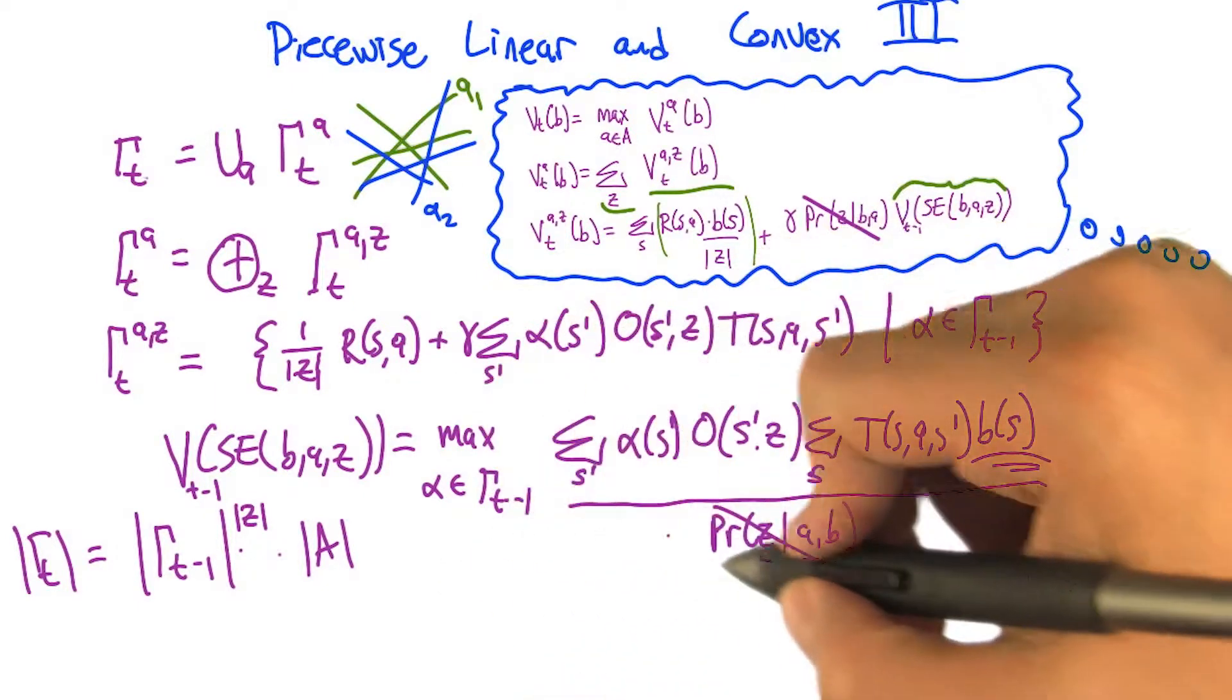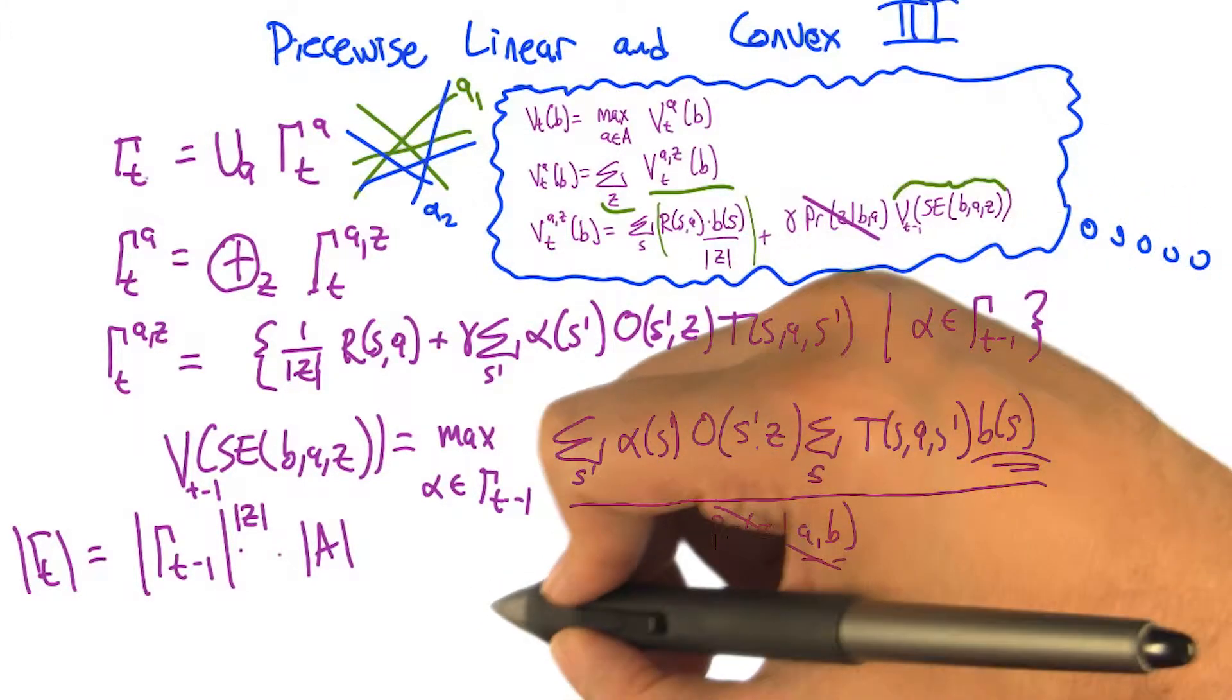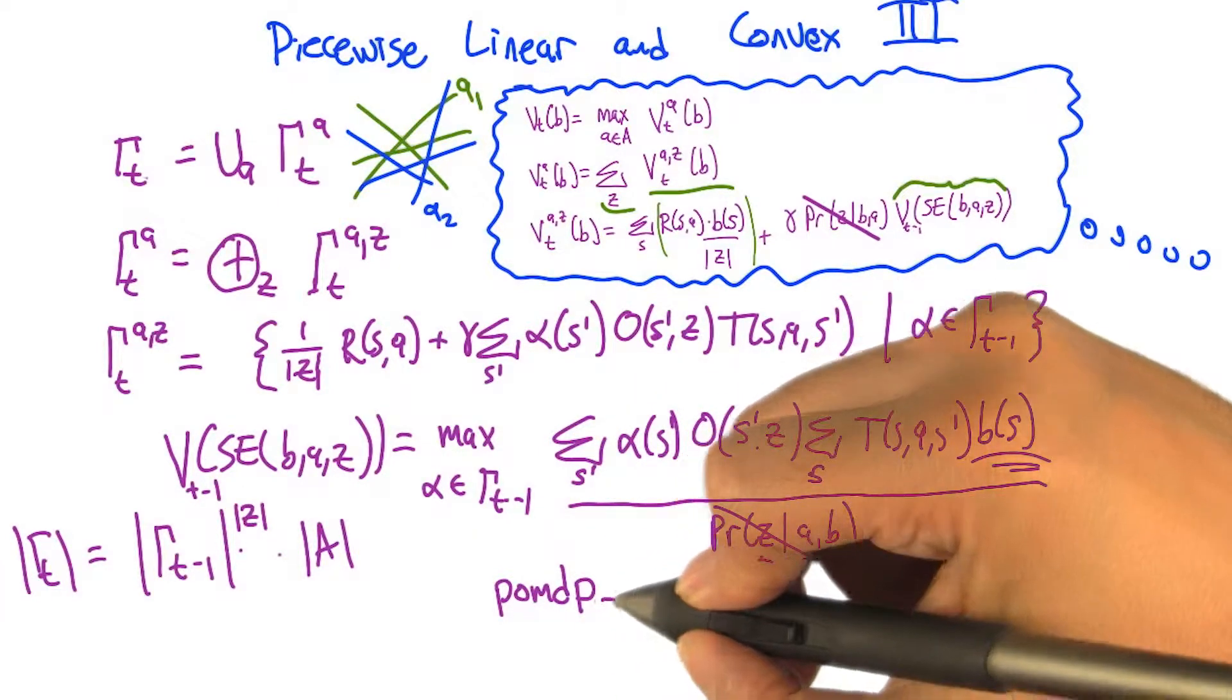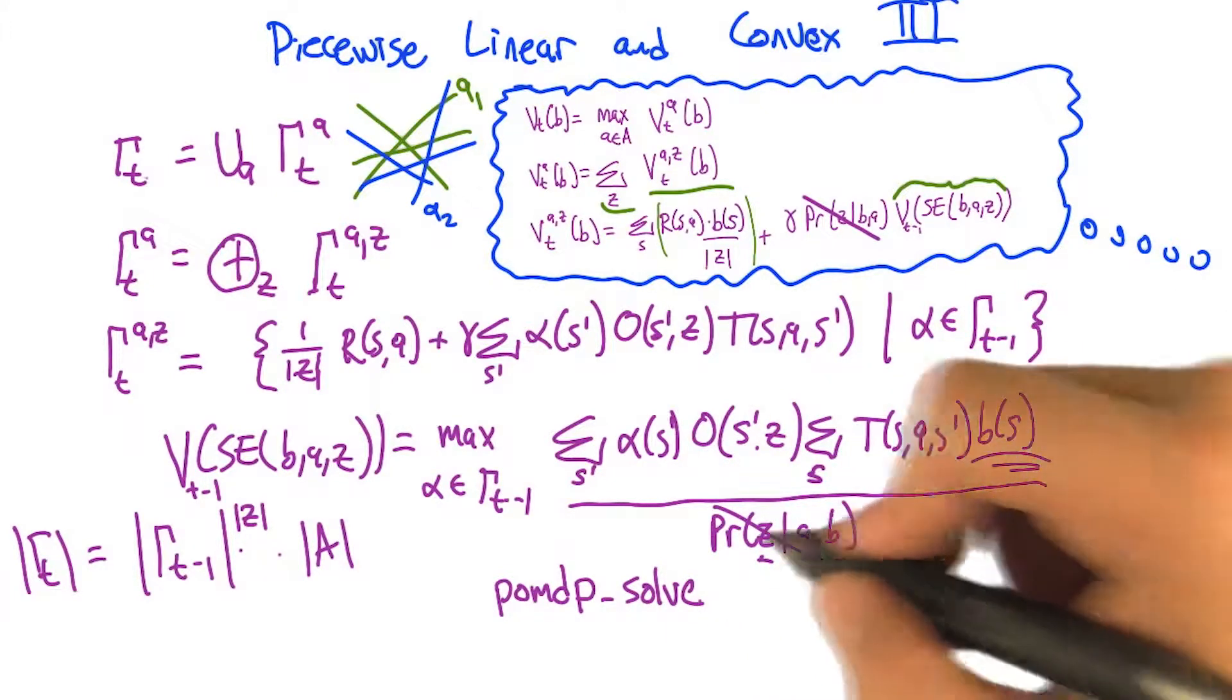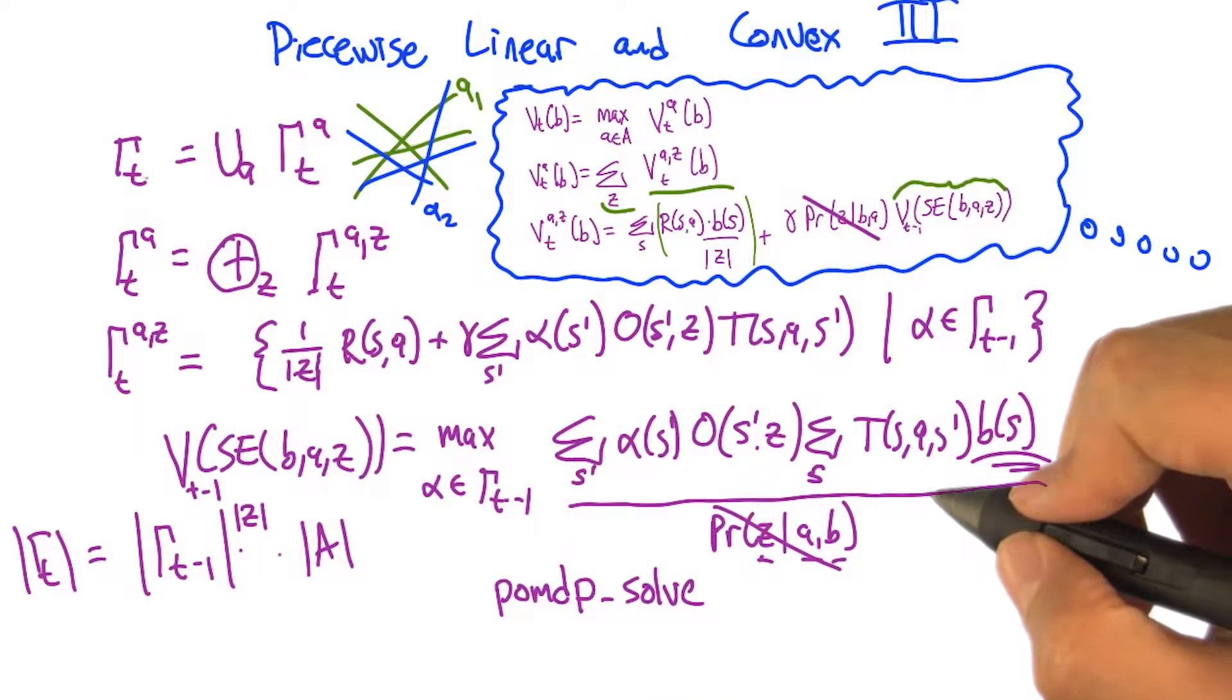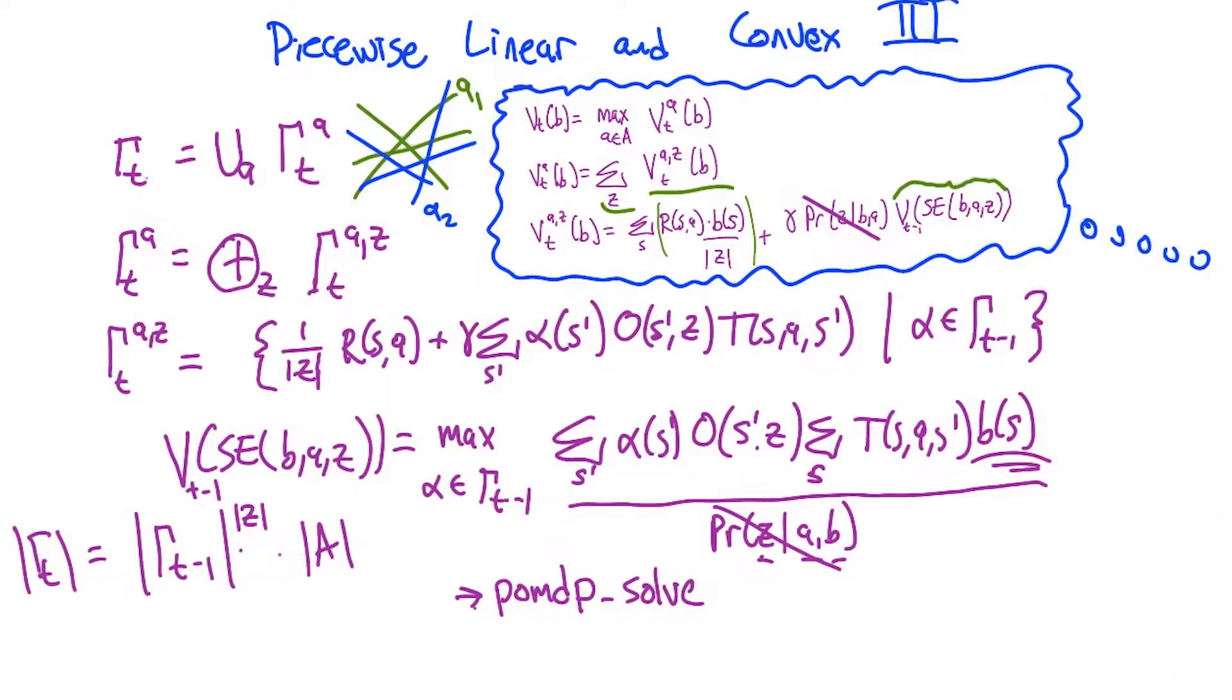And so you wouldn't want to actually do this. There is code in burlap for doing a lot of these processes. There's also my collaborator, Tony Cassandra, created a program called POMDP solve that you can download, that does all these calculations carefully on your behalf. So I didn't really want to get this to the point where you could actually necessarily code all this up, just to believe that it's code-upable and you can use an existing implementation if you want to actually run it.